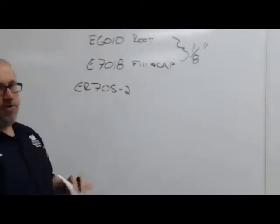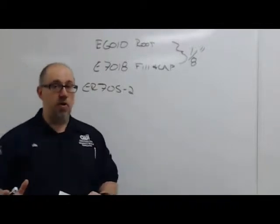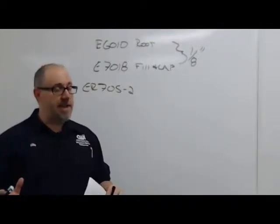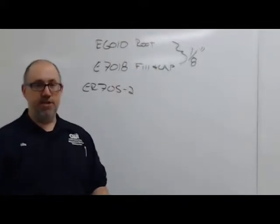For most TIG, I like 3/32. When I'm doing my root, when I'm doing my fill passes, I might go up to a bigger thing, like 1/8. I want to put some weld in fast, but 3/32 will get you there and go the whole way.